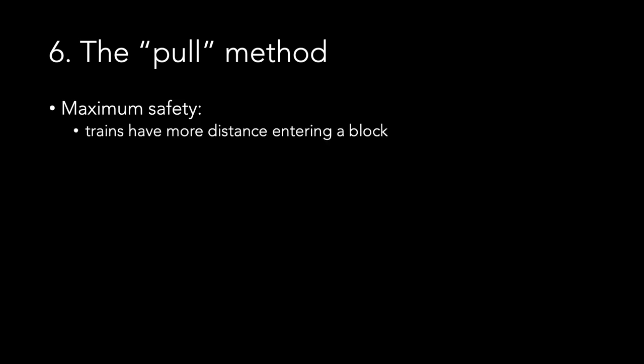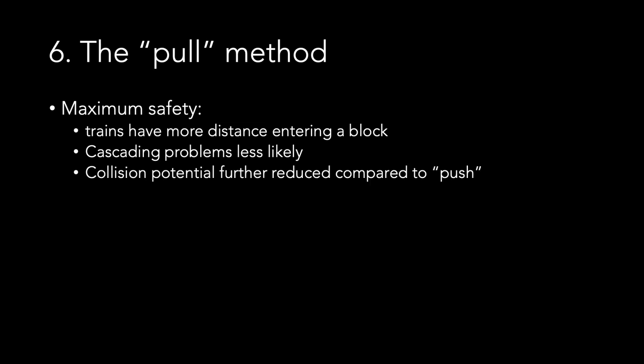As you might have noticed, this method makes for more energetic traffic. Let's have a look at a few general observations about the pull method. I think it offers the maximum safety because trains are more distant when entering or leaving a block. Cascading problems are less likely because trains moving only trigger events in the back of them. So if anything was to happen to one of those moving trains, the traffic on the block is more likely to stop as opposed to start a cascade of events ahead of it. So the collision potential using this method is further reduced, especially compared with the push method.